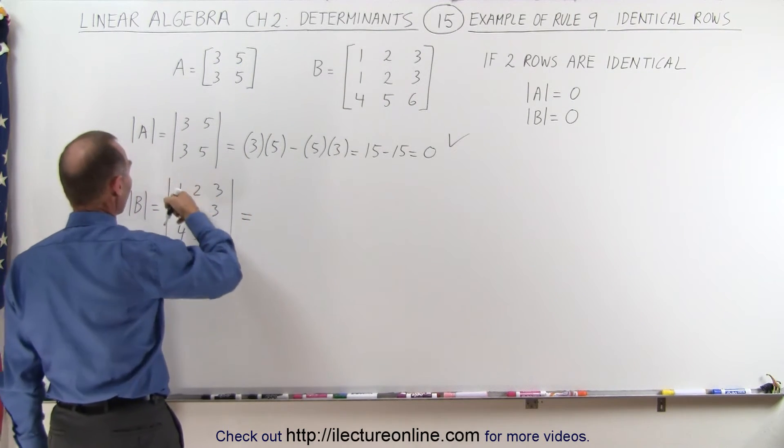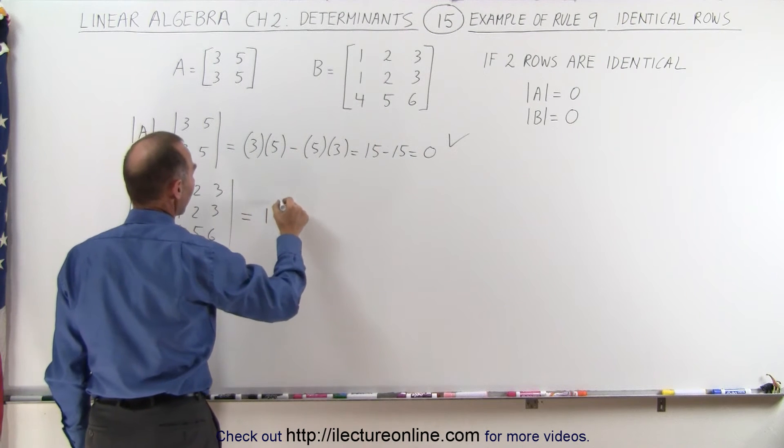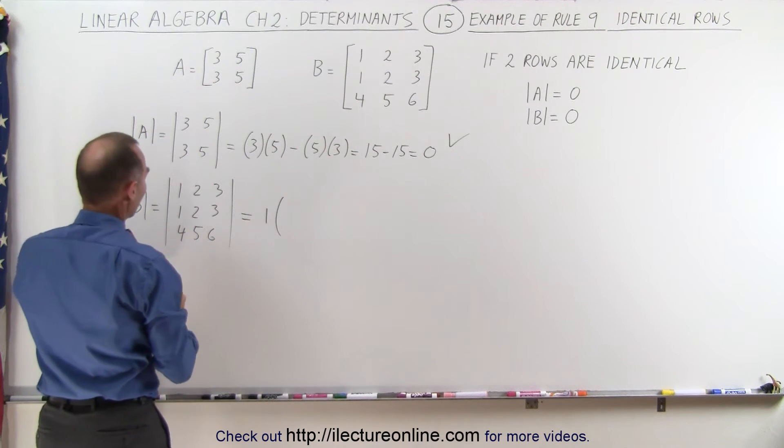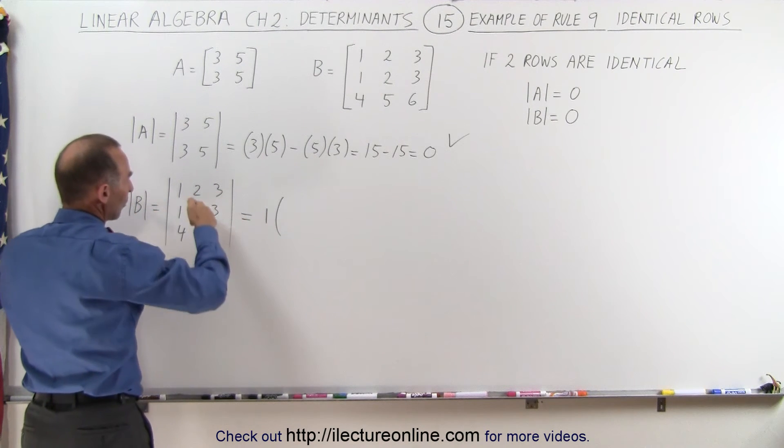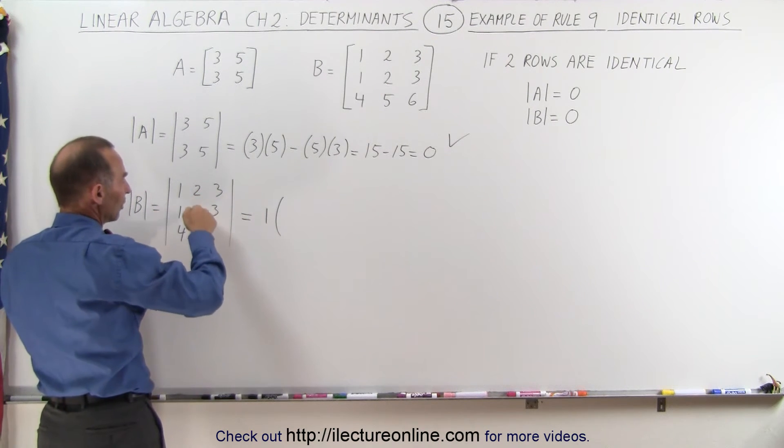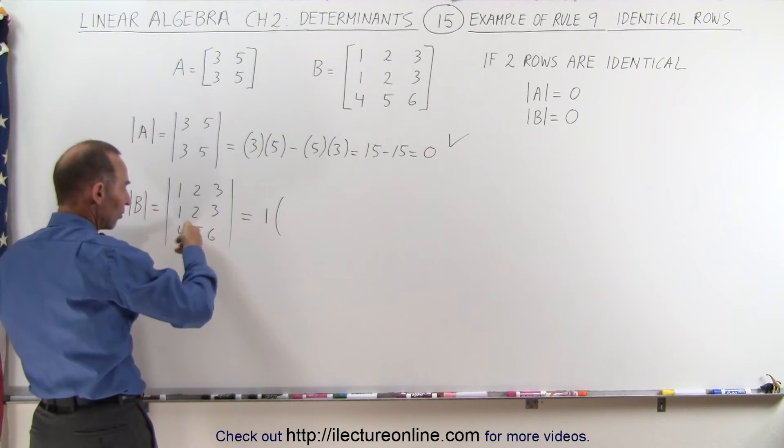This is equal to the first element, 1, times - now when we get rid of that column and this row we just have these four elements left and then we multiply this just like a 2 by 2. You get the product of those two minus the product of those two.